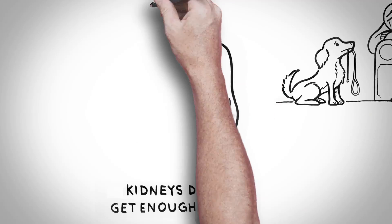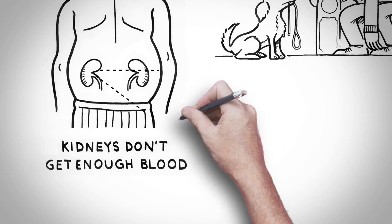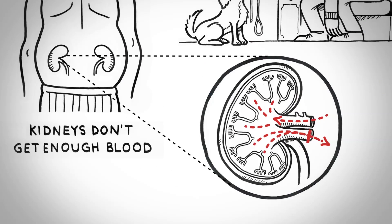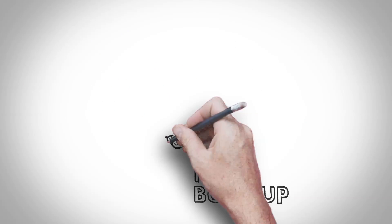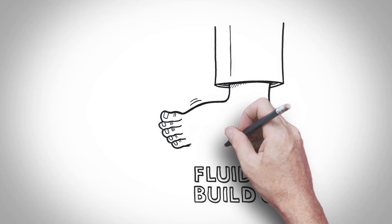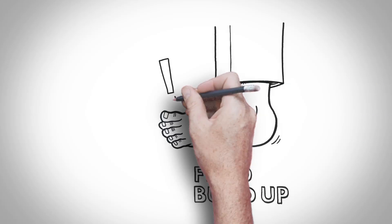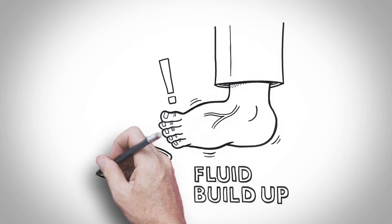When the kidneys don't get enough blood, they can't do their job properly, so fluid can build up around the body, particularly in feet and ankles. This can be uncomfortable and make putting shoes on a challenge.